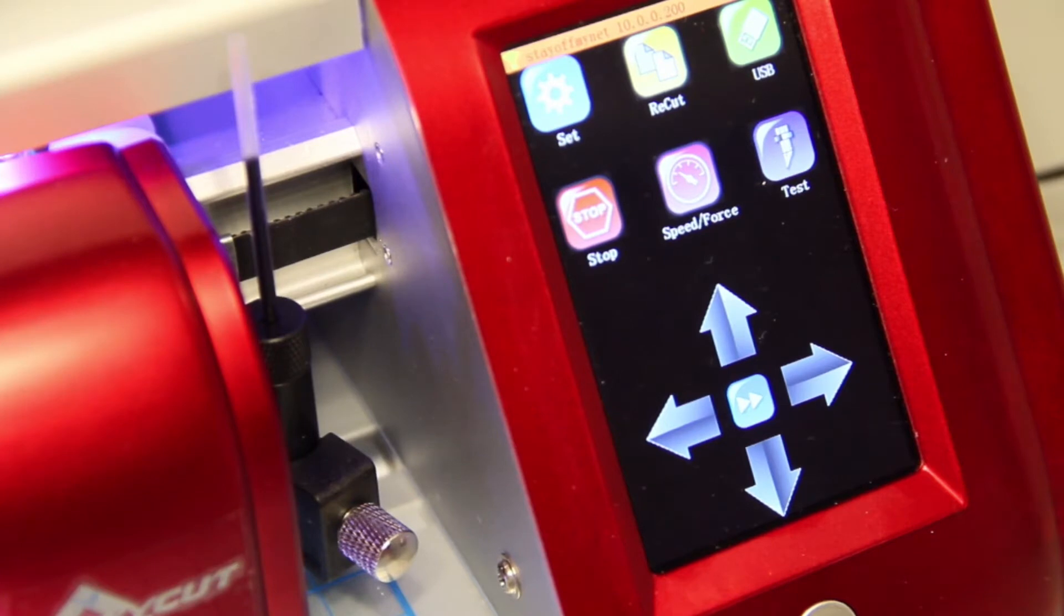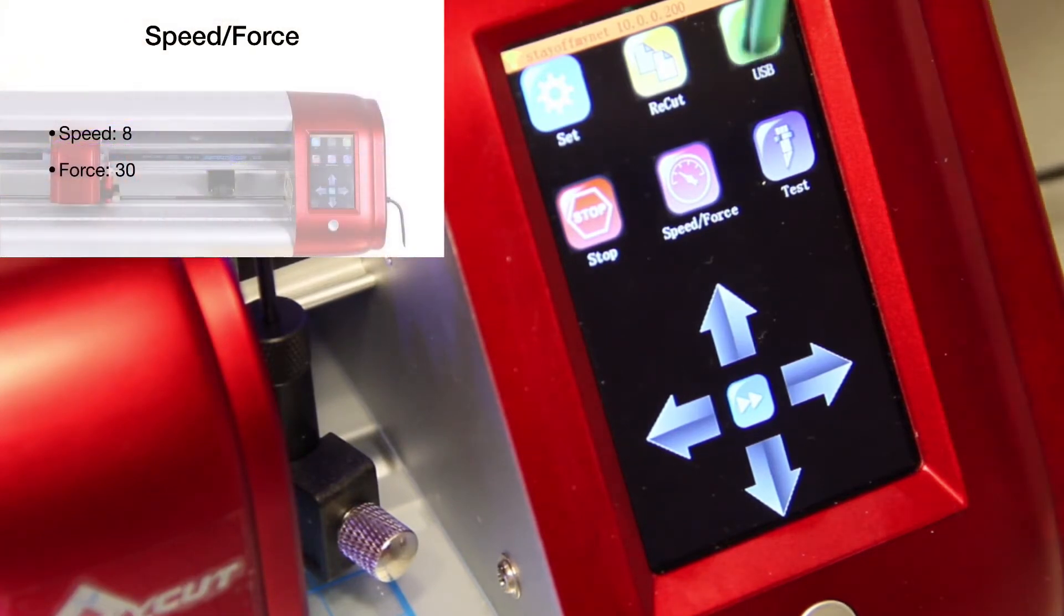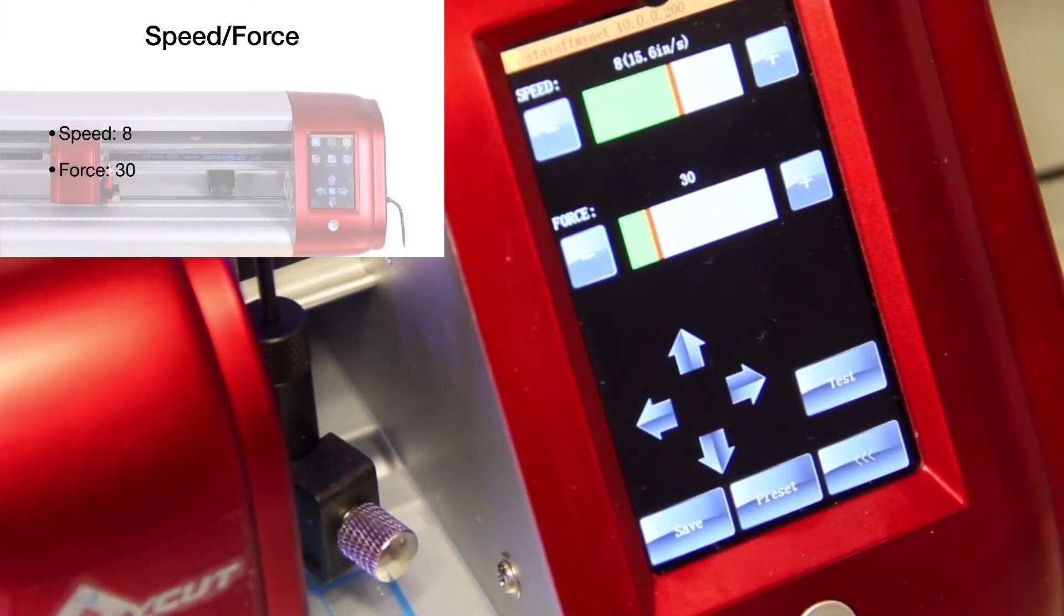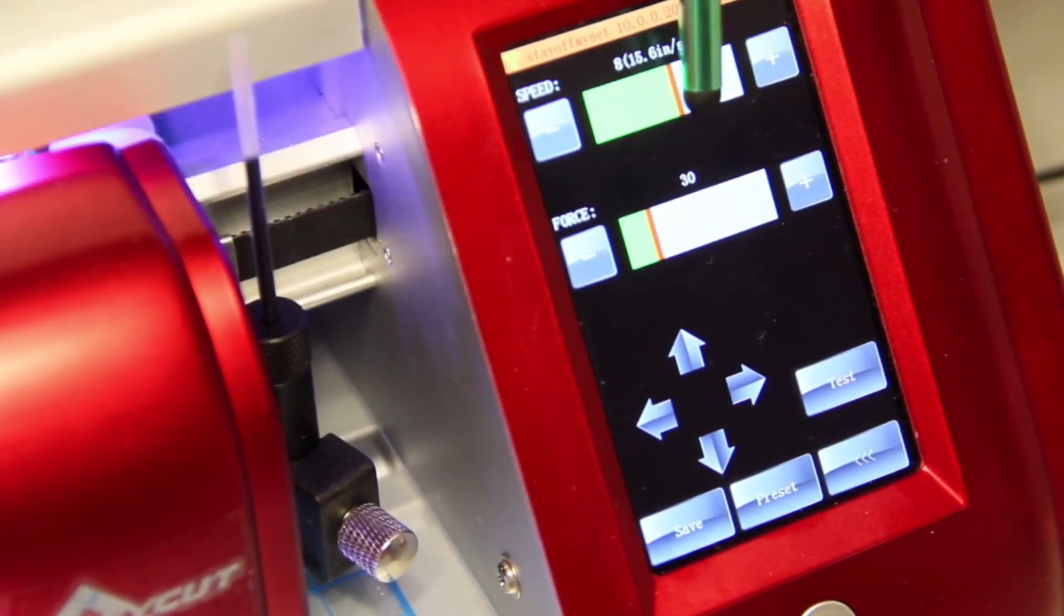And then we need to make sure that the pen can draw on the paper with the proper force and speed. So the manual actually suggests that we have the speed here set to 8, and then the force set to 30.